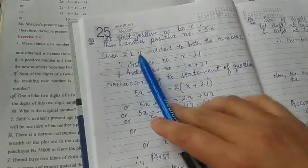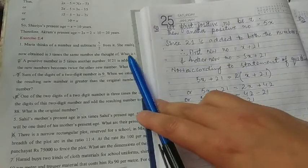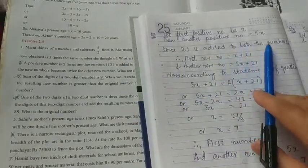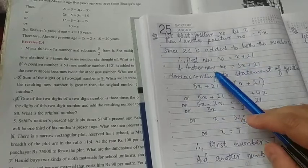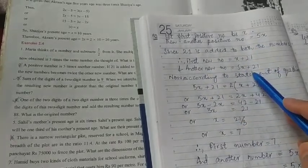Since it's been said that we have to add twenty one to both the numbers, okay, we have to add twenty one. So since twenty one is added to both the numbers, the first number will be x plus twenty one and the second number will be five x plus twenty one.